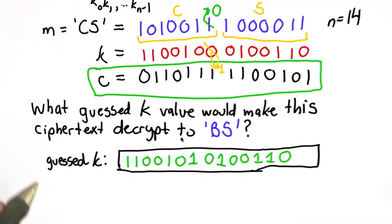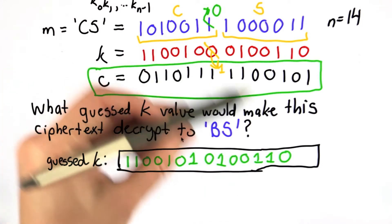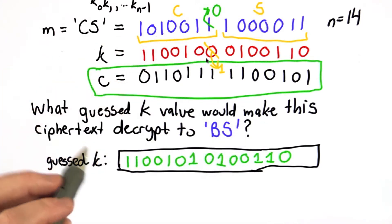So we saw earlier how we could prove correctness, and correctness is easy to show. Proving security is really hard. This property of the one-time pad that we can change the key, and that leads to a different message, is the reason why it is secure.